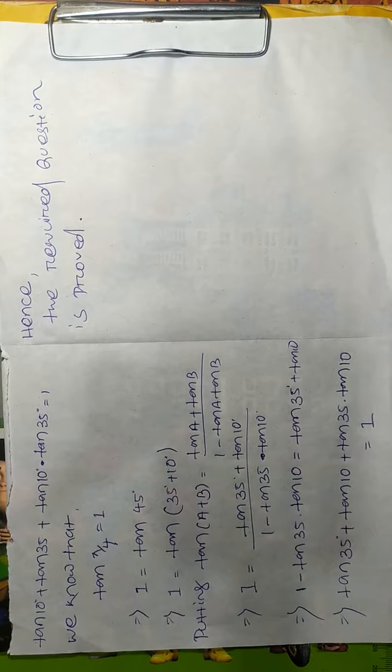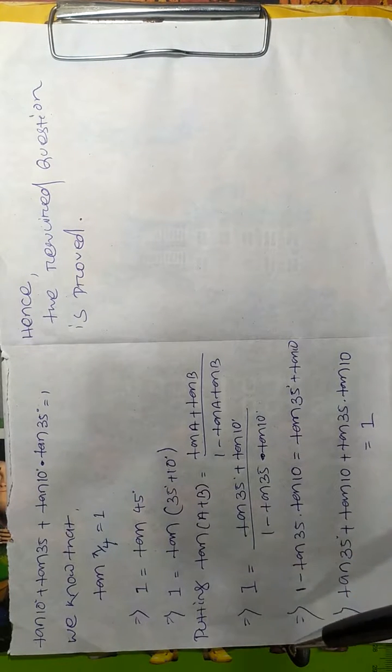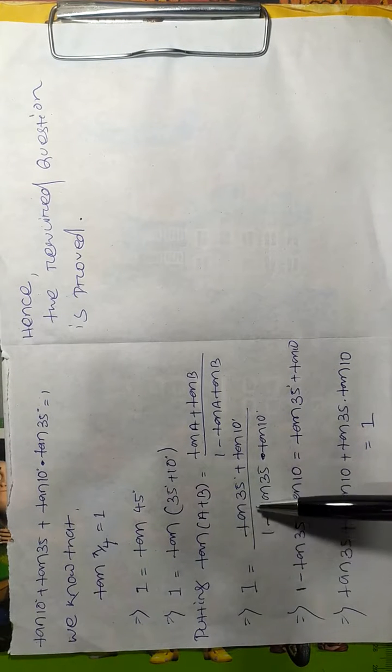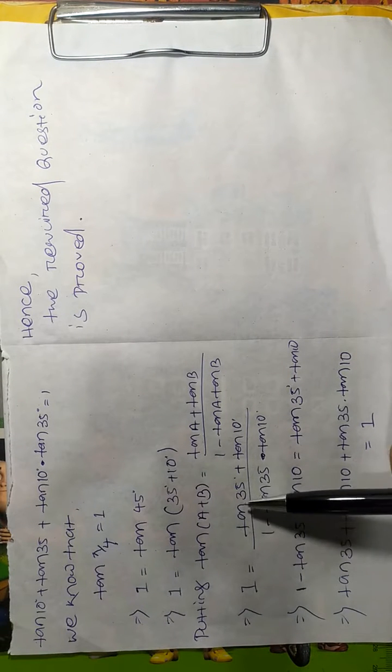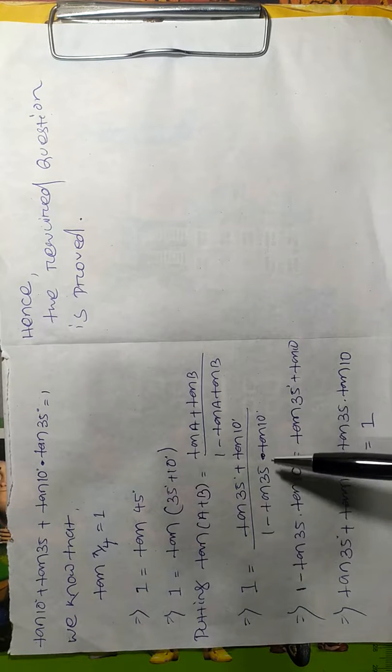The equation becomes tan 35° + tan 10° divided by 1 - tan 35° × tan 10°. In this case, a is changed to 35° and b is changed to 10°.